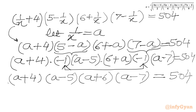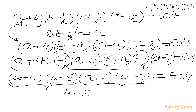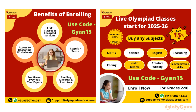Now I will consider brackets (a+4)(a-5) together and (a+6)(a-7) together, since 4-5 = 6-7.